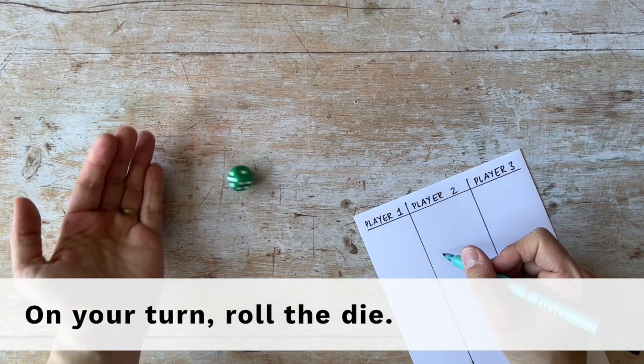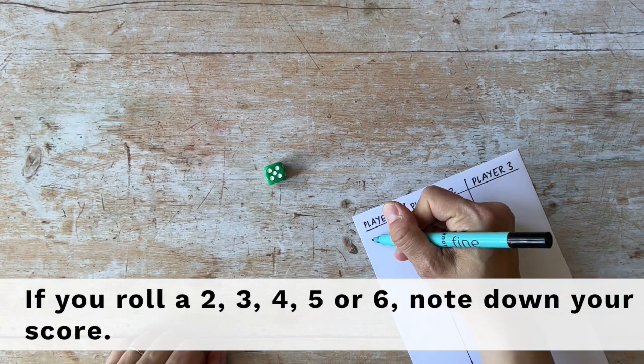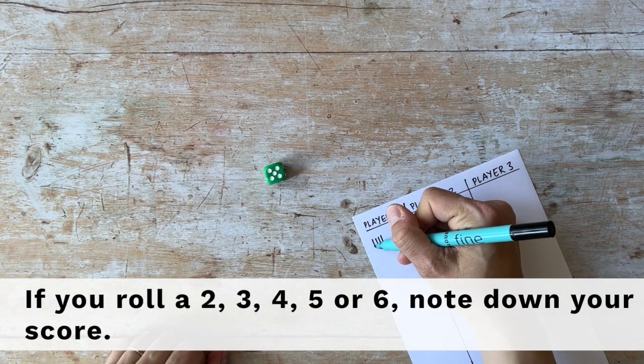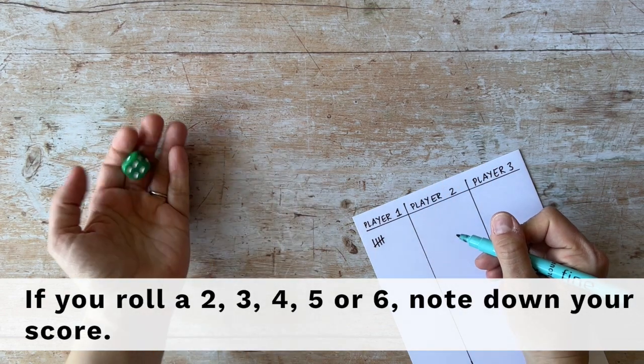On your turn, roll the die. If you roll a two, three, four, five, or six, note down your score.